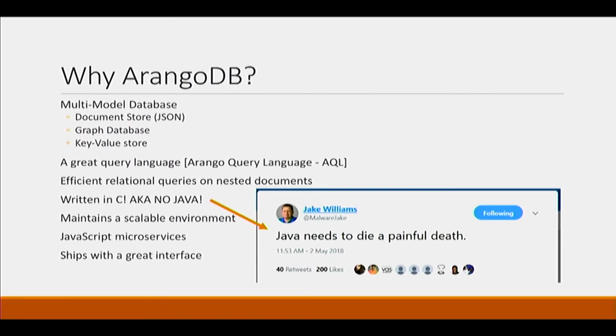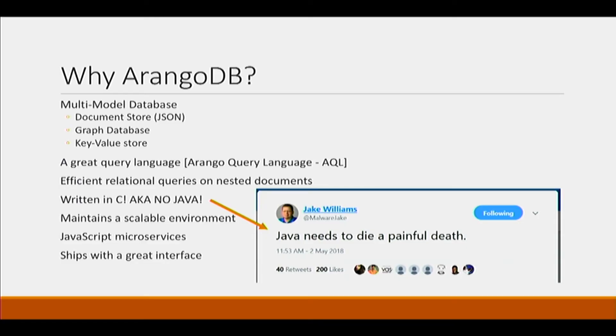We need a solution that can address those challenges. I give you ArangoDB. Not only is its icon avocados, it's a multi-model database, which consists of a document store, a graphing database, and a key-value store, all in one package.